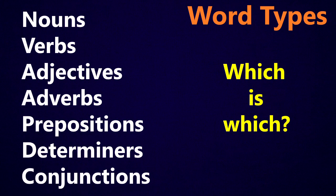Well, the big key for understanding the difference between these word types is the context — that is, how is the word being used in a sentence? If you can look at the sentence and gather some clues about where the word is, what it looks like, and what other words it's connected to, then that will help you to know what type of word it is.